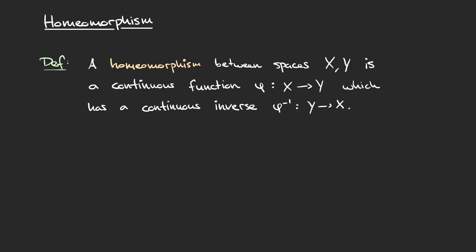If we have topological spaces X and Y, we say that a continuous function, which I'll call phi, between them is a homeomorphism if it has a continuous inverse. Remember that we defined continuity in terms of open sets, so we said that a function from X to Y is continuous if every open set in the space Y has an open preimage in X under that function.